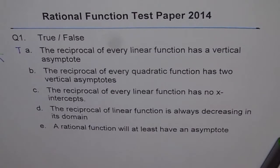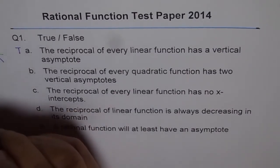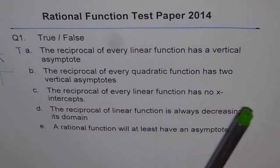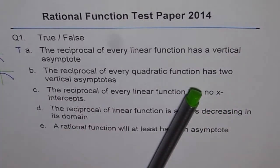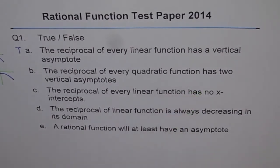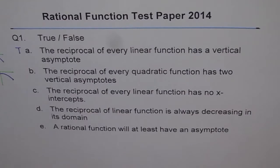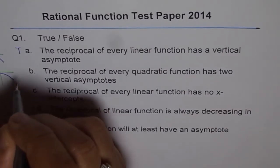Next, a reciprocal of every quadratic function has two vertical asymptotes. This is wrong. Because we could have a quadratic function like this which may not cross the x-intercept, which may not cross the x-axis and therefore will not have any vertical asymptote. So this statement is false.